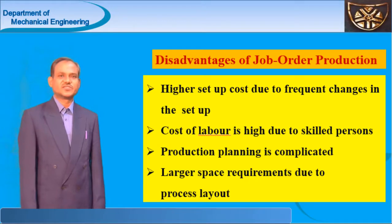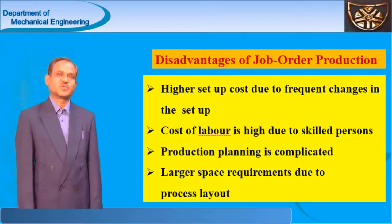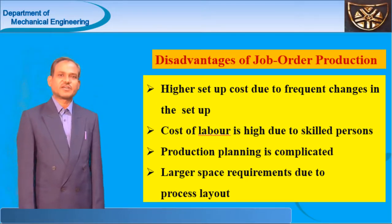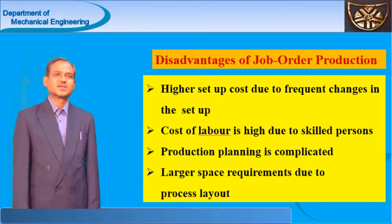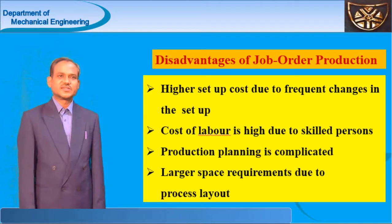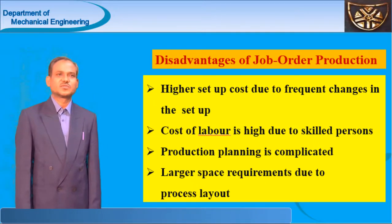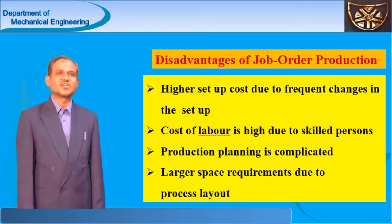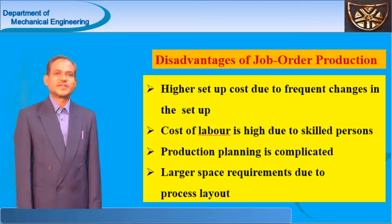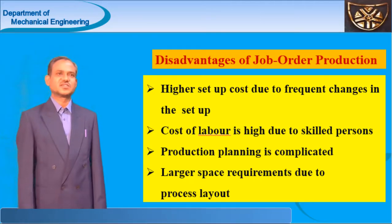The main limitation of job order production is that the cost of labor is high. This is because job order production requires highly skilled persons, and the cost spent on skilled labor is more. There are three types of labor: skilled persons, unskilled persons, and semi-skilled persons. Organizations pay more salary to skilled persons, less to unskilled persons, and average to semi-skilled persons. Another disadvantage is that production planning and control all become complex in the case of job order production.